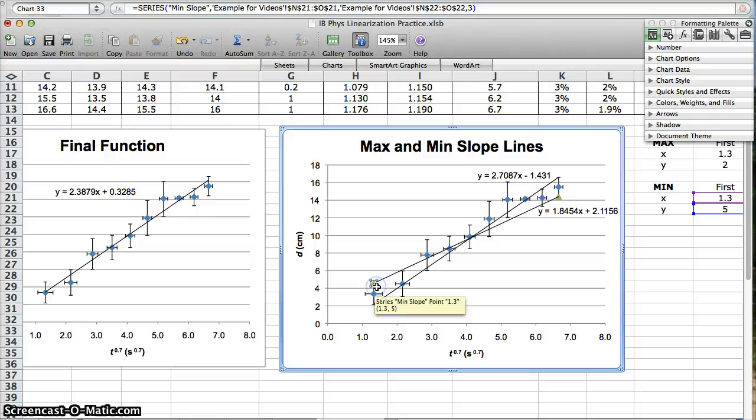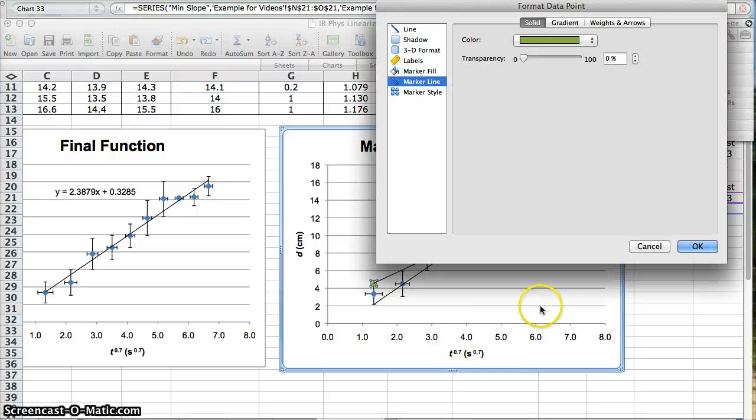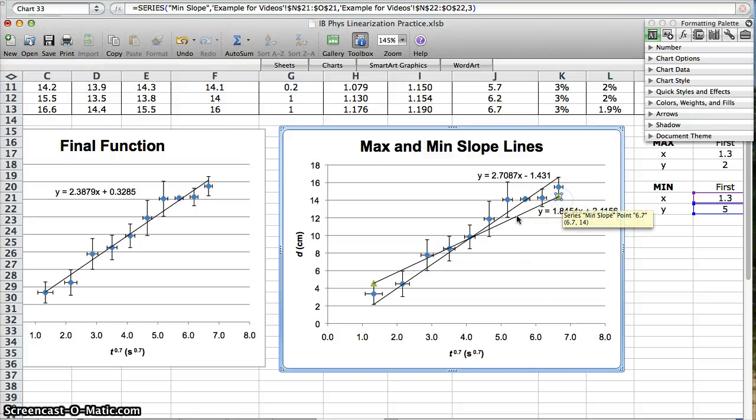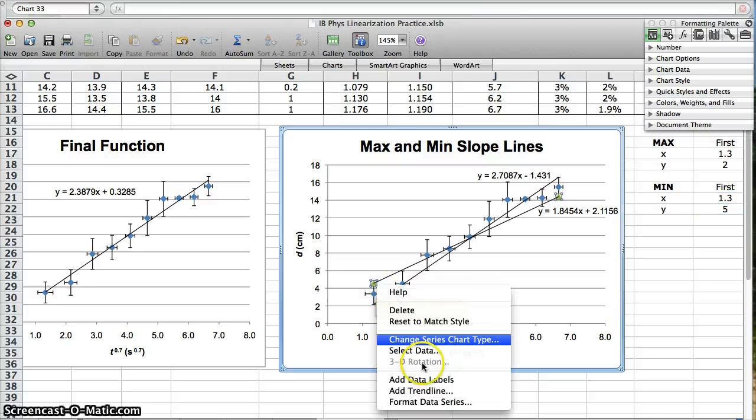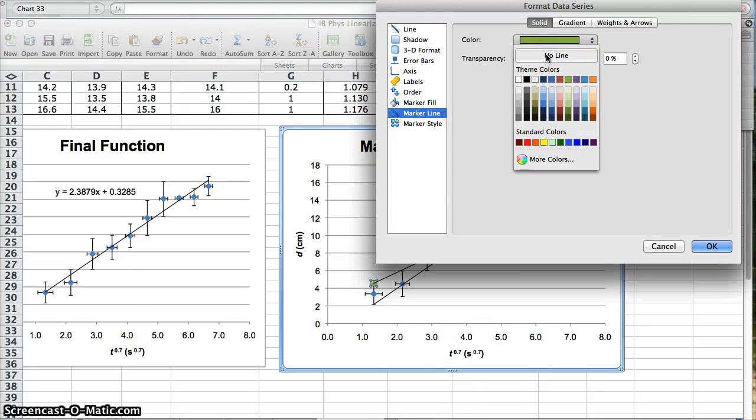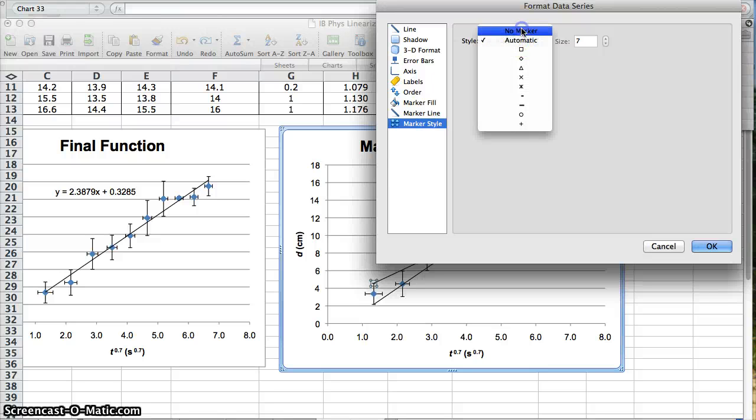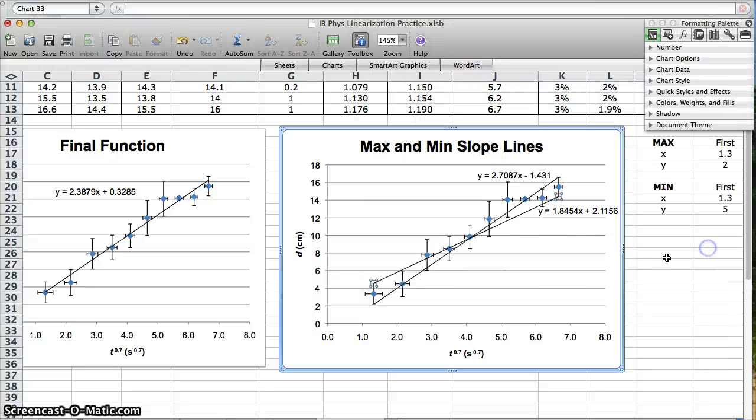You can do the same thing here. Right click. Format data point. Uh-oh. Data point. I don't want to format just the one. I want to format both. Let me try clicking again. There we go. Uh-oh. Gosh. Now I can format the data series, the whole series. So I want to get rid of the marker line. Make it no line color. For the marker fill, you can do no fill. Marker style. Oh, you can also just click no marker for marker style. That'll do it, too. And now it's invisible.